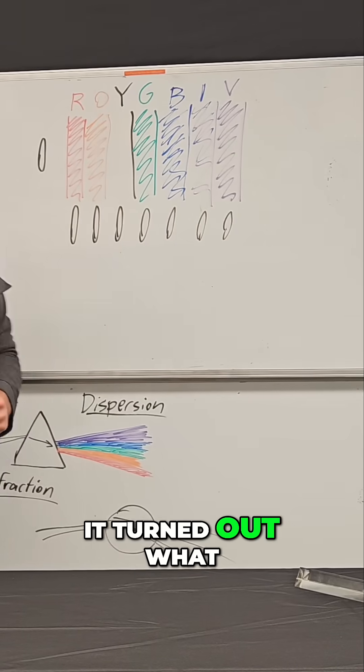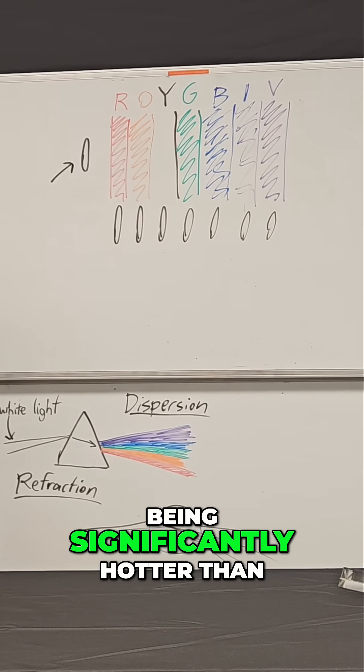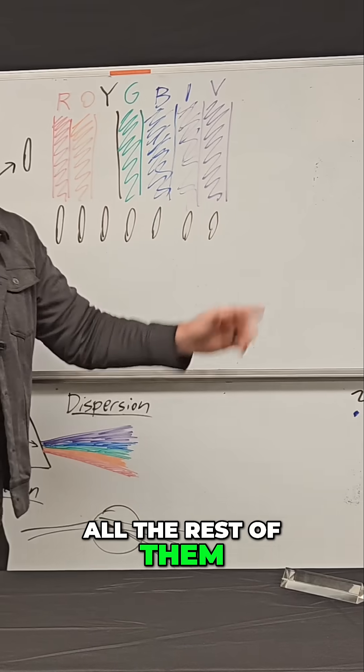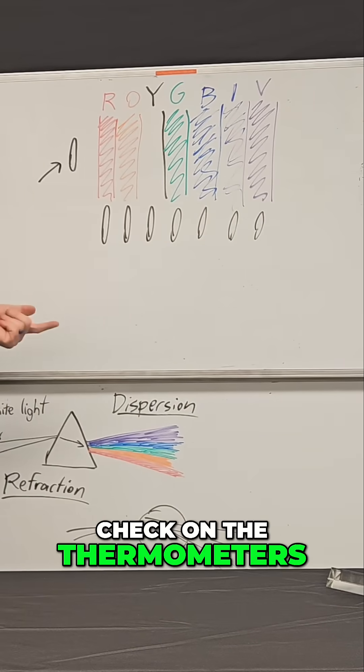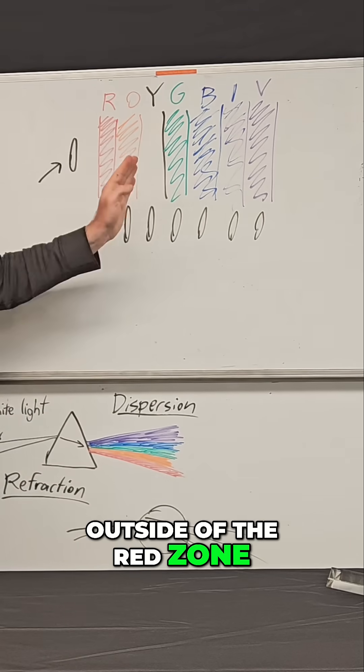But accidentally, it turned out what he found was that this thermometer ended up being significantly hotter than all the rest of them. So he went to check on the thermometers later, and he was shocked to see how hot this area was outside of the red zone.